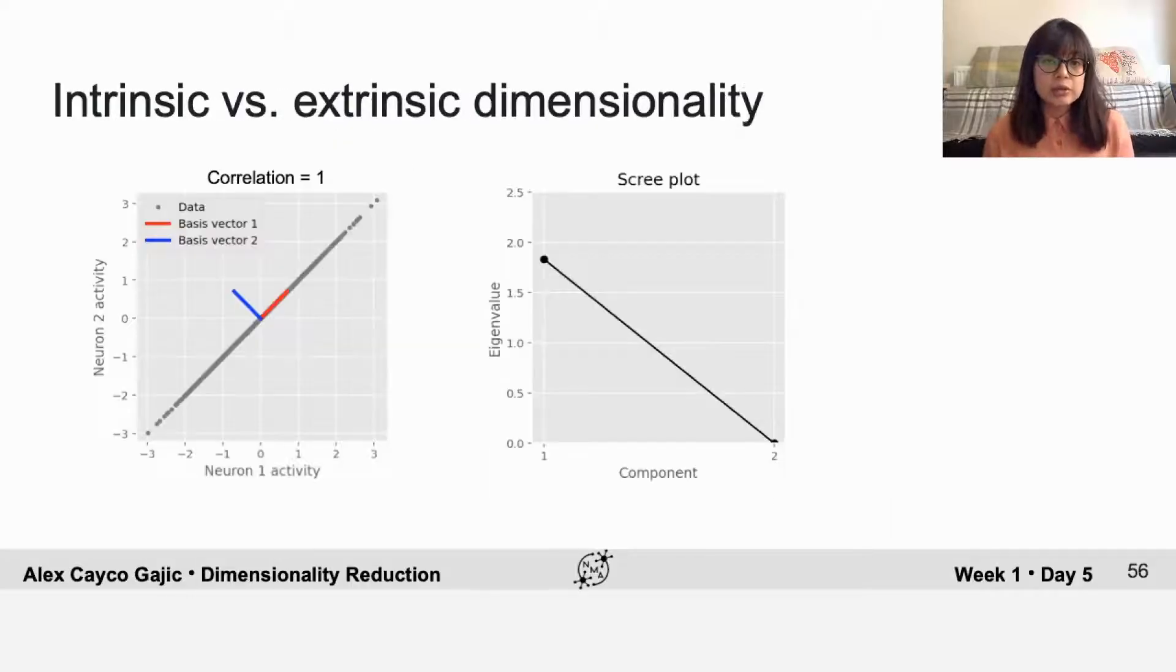To illustrate this, I'll use an example from the previous tutorial. It's important to distinguish here between the intrinsic and the extrinsic dimensionality. The extrinsic dimensionality is the number of variables that we're observing. So in this case, it's just two.